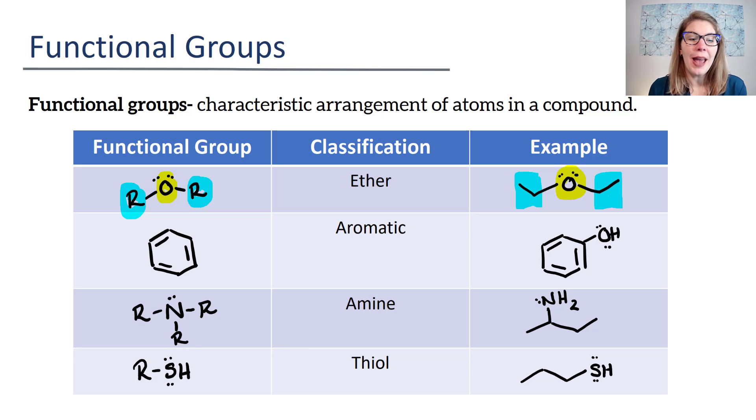Whereas your aromatic is going to have six carbons with alternating double bonds. So double bond, single bond, double bond, single bond, and so on, which we'll talk about a little bit more in this chapter.